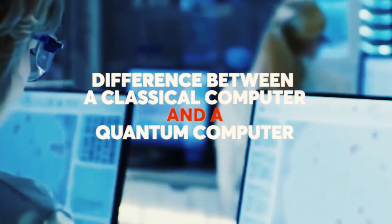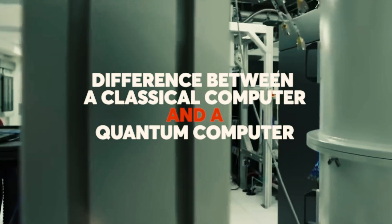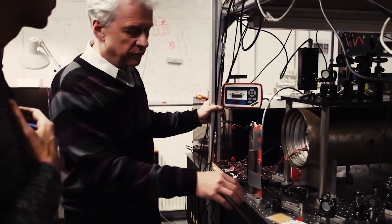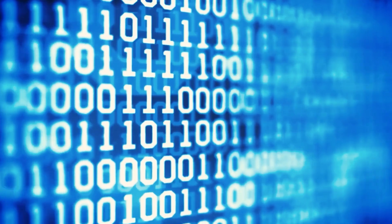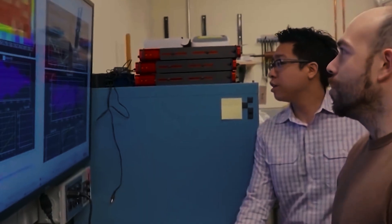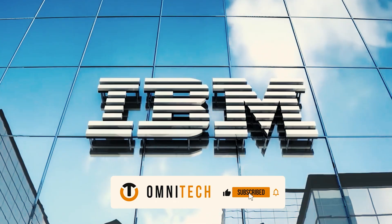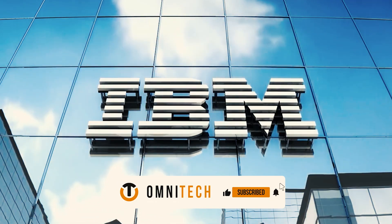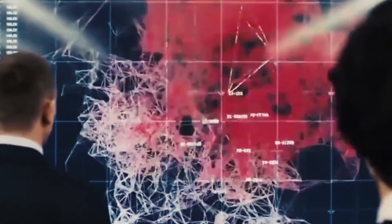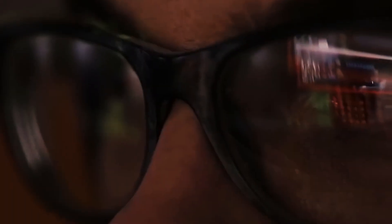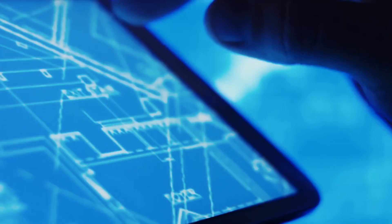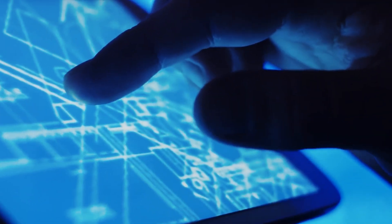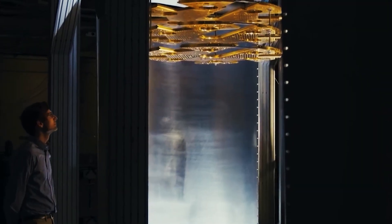To understand why it's so tricky to build quantum computers, here are a few facts about classical computers first. A bit in a normal computer is like a switch, on or off, one or zero in short, a binary transistor. So if you want to run many computations simultaneously, you need just as many bits. And while today's chips can feature several billion transistors, their number is still limited.